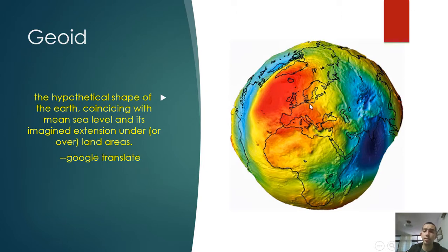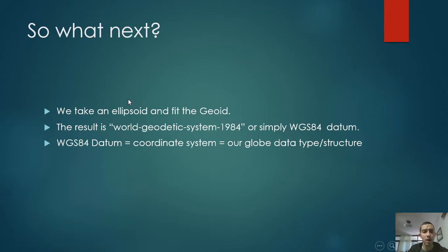So what next? We take an ellipsoid and fit the geoid, and the result is World Geodetic System 1984, or simply WGS84 datum. So we understand the WGS84 datum means first the coordinate system, and second it's our globe data type or structure.